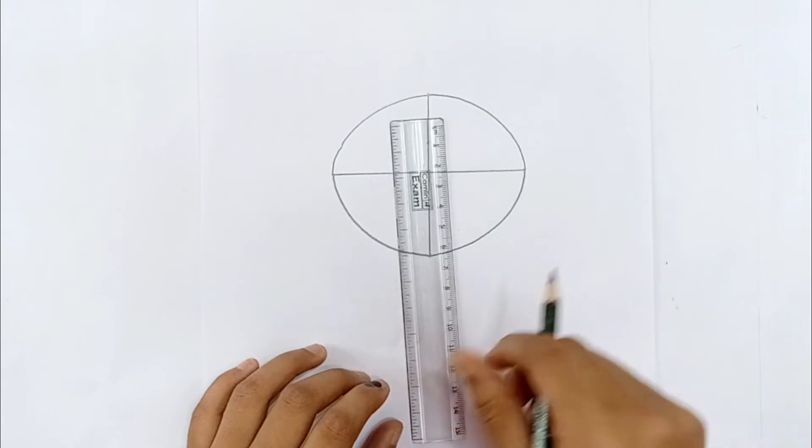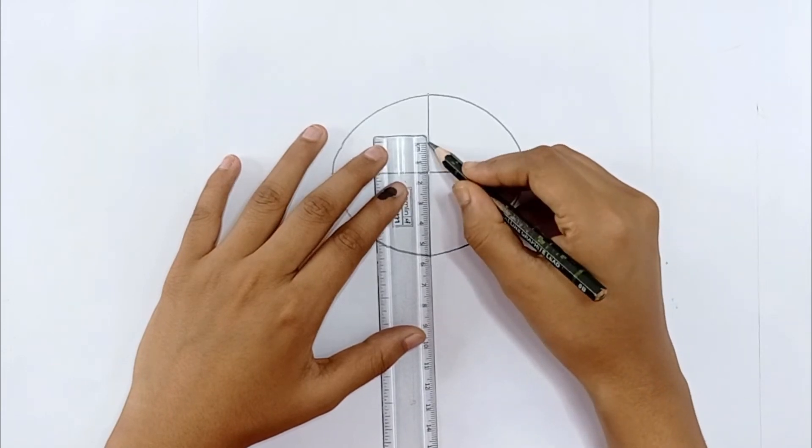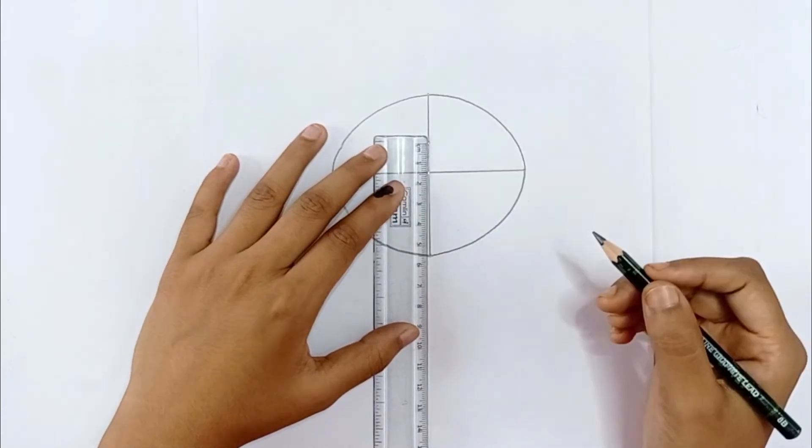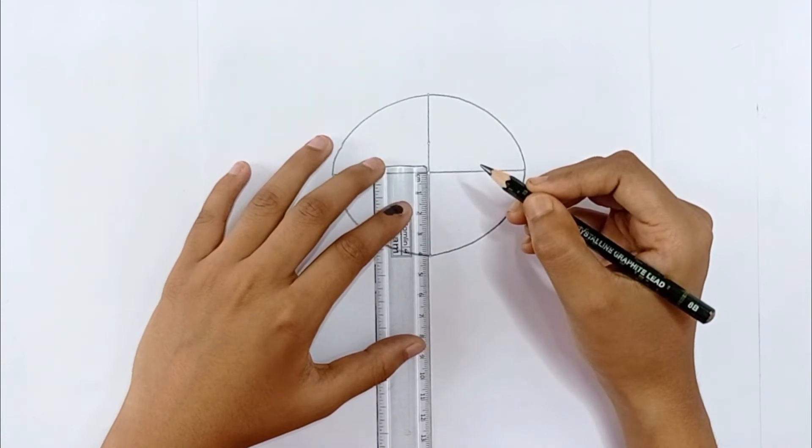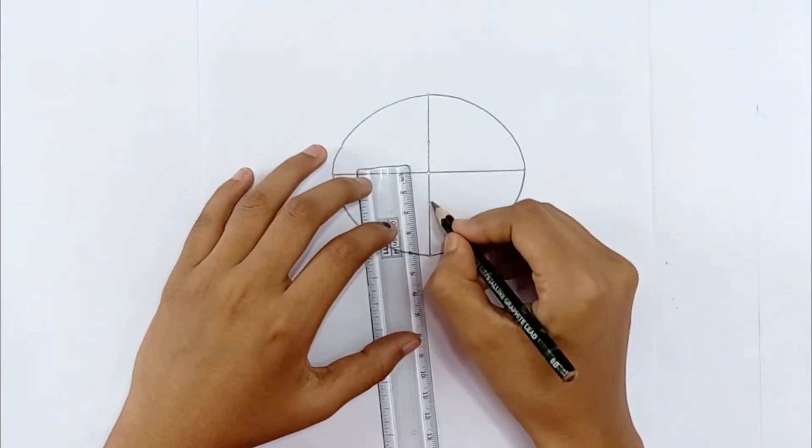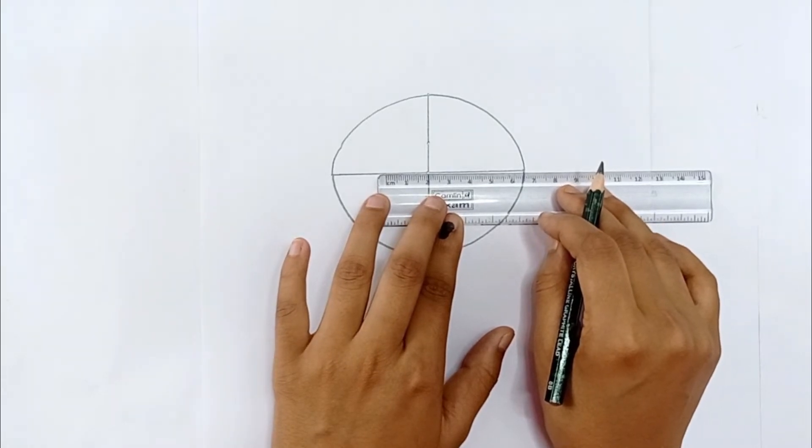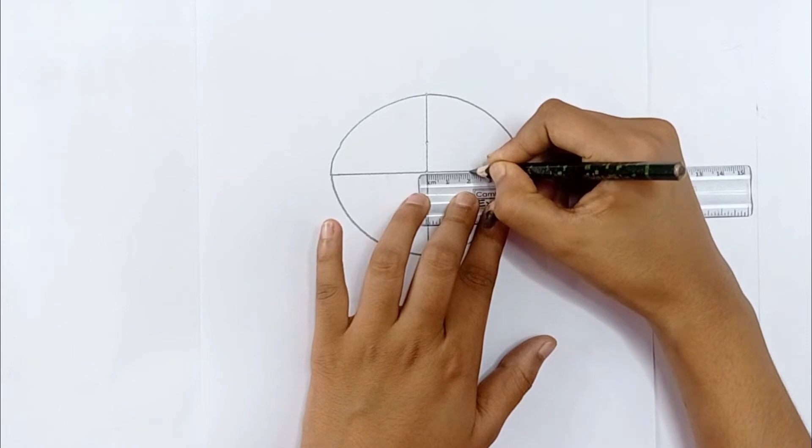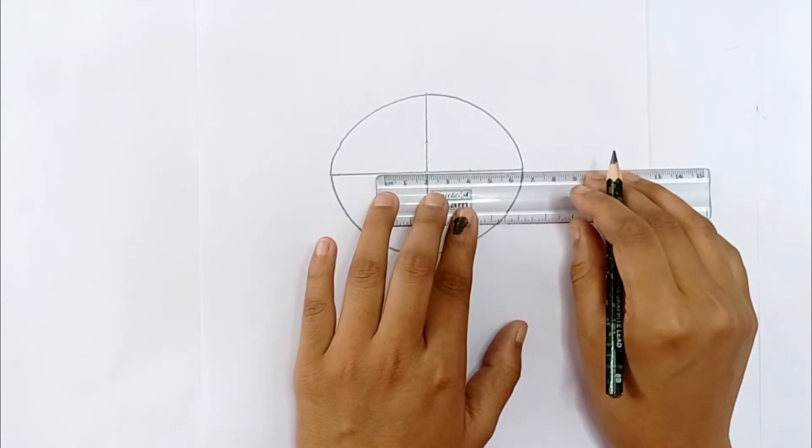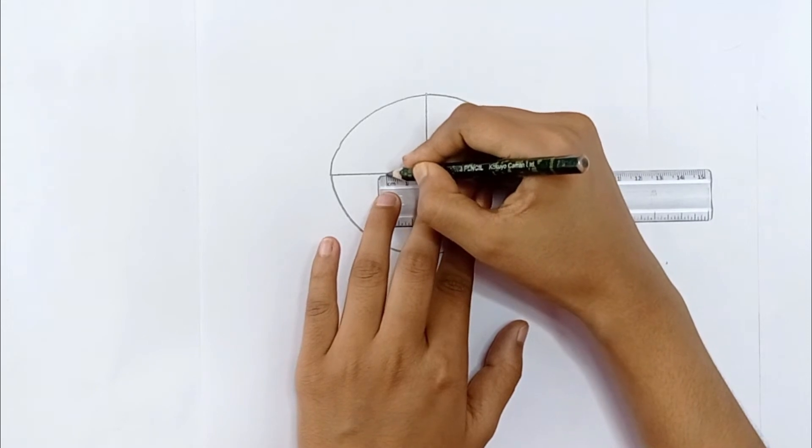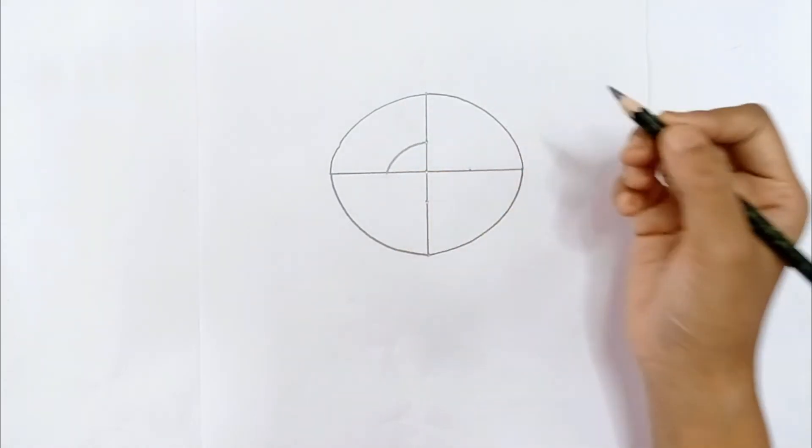Then we will draw a small oval shape inside this large oval shape. Now we will use the scale to draw two lines of 1.5 cm in length above and below the midpoint. This time I will draw two lines of 2 cm length to the right and left of the midpoint. I will draw a small oval by connecting these four points.